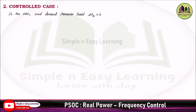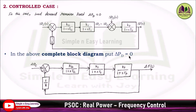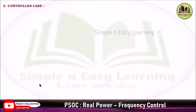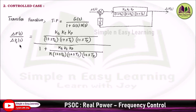For the controlled case, the load demand remains fixed but the speed changer setting varies. We set ΔPD = 0 in the block diagram. The block diagram is reduced by multiplying all three blocks together into a single block, with 1/R in the feedback. Finding the transfer function: ΔF(s) / ΔPC(s), where the input is ΔPC(s), G(s) is the forward block, and H(s) = 1/R.